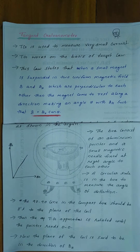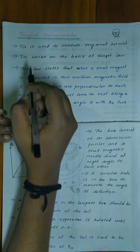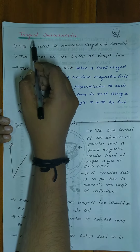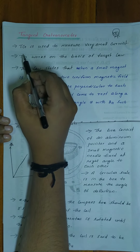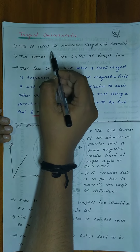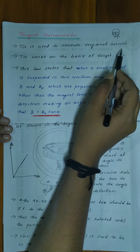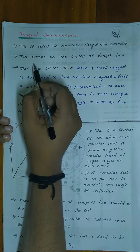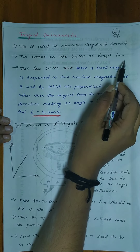Good morning to all. Today we will discuss the tangent galvanometer. The tangent galvanometer is used to measure very small current. The TG works on the basis of tangent law.